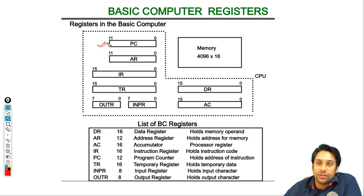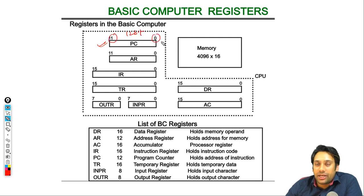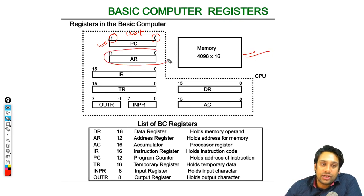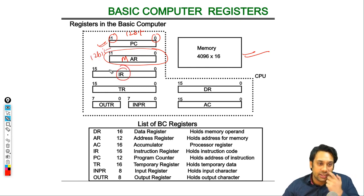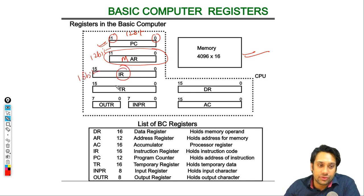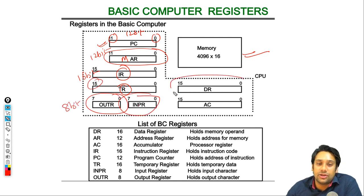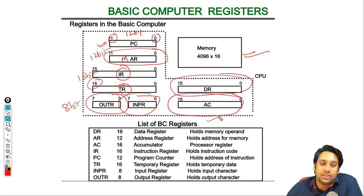To summarize the registers of the basic computer: the program counter is 12 bits (bits 0–11); the address register (MAR) is 12 bits; the instruction register is 16 bits; the temporary register is 16 bits; the input and output registers are both 8 bits; the data register is 16 bits; and the accumulator is 16 bits.